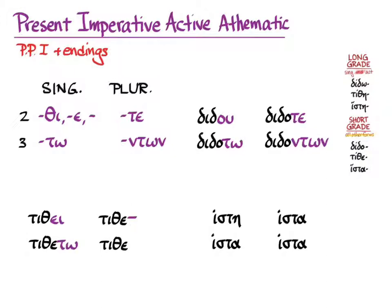The other endings go on as you would expect for athematic verbs, and they simply go on to the short stem and are pretty regular. With recessive accent, we get: δίδου, διδότω, δίδοτε, διδόντων; τίθει, τιθέτω, τίθετε, τιθέντων; ἵστη, ἱστάτω, ἵστατε, ἱστάντων. And that's the present imperative active. The θι ending will get used for some athematic verbs, and you'll have to learn those when you encounter those new verbs.